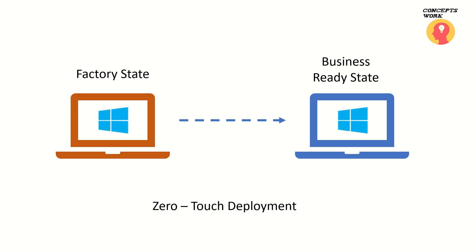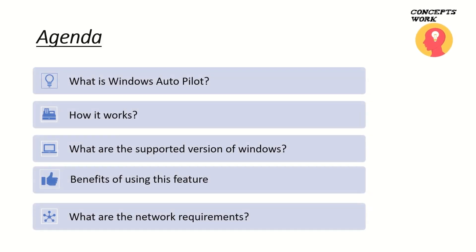With traditional solutions there are multiple on-prem resources that you have to deploy, whereas Windows Autopilot is a complete cloud-native solution with no on-prem deployment required. The core agenda of this video will be: what is Windows Autopilot, how exactly it works, what are the supported versions of Windows, what are the benefits, and what are the basic network requirements.